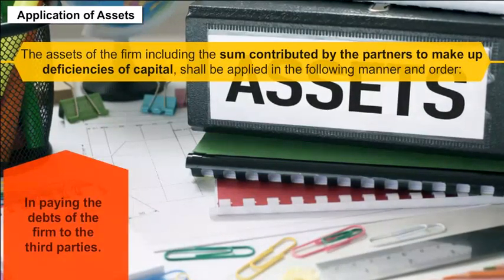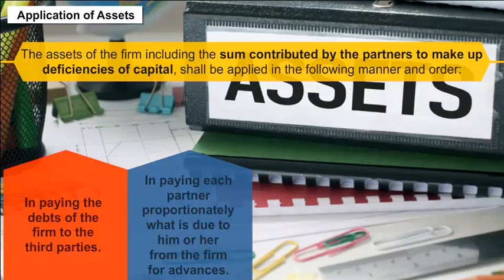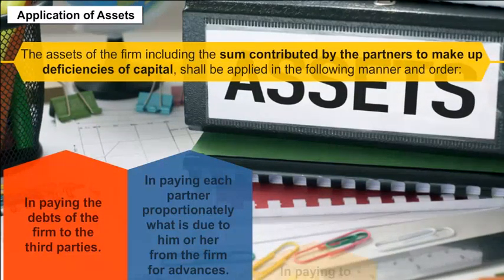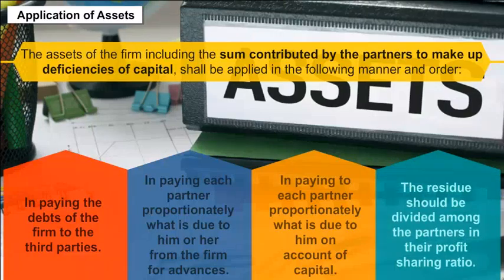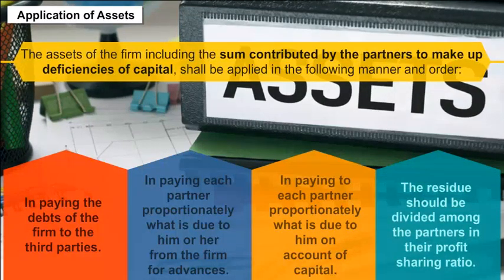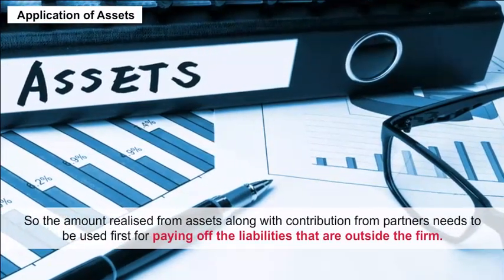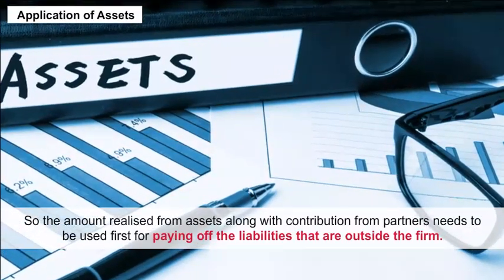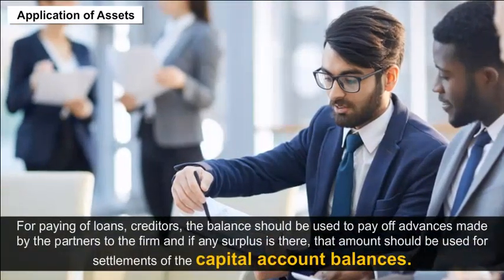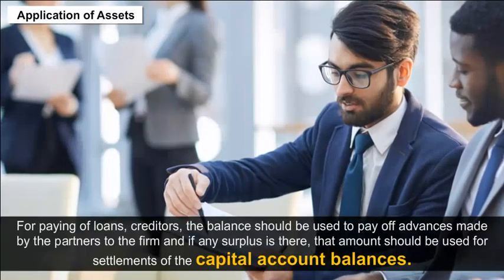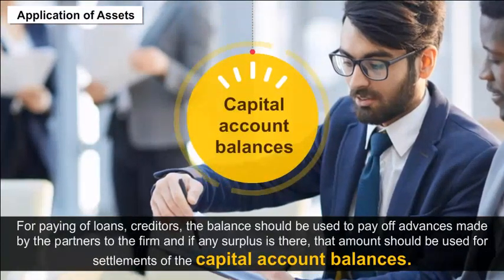The assets shall be applied in the following order: first, in paying the debts of the firm to third parties; then in paying each partner proportionately what is due from the firm for advances; then in paying each partner proportionately what is due on account of capital; and finally, the residue should be divided among the partners in their profit sharing ratio. The amount realized from assets, along with contributions from partners, must first be used to pay off external liabilities and creditors, then to pay off advances made by partners, and any surplus used for settlement of capital account balances.